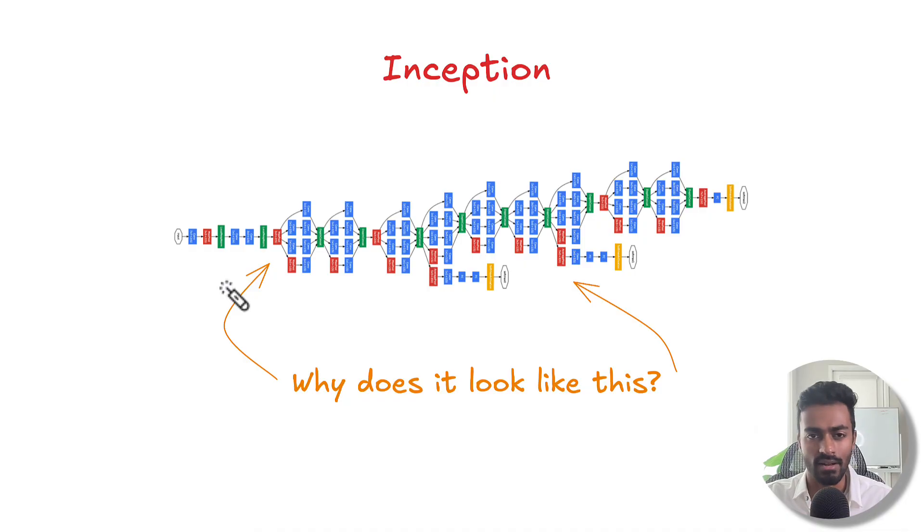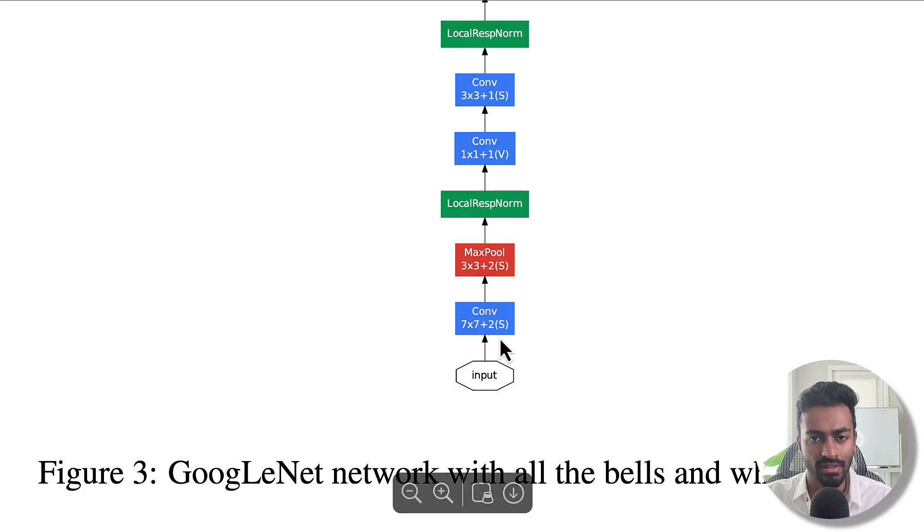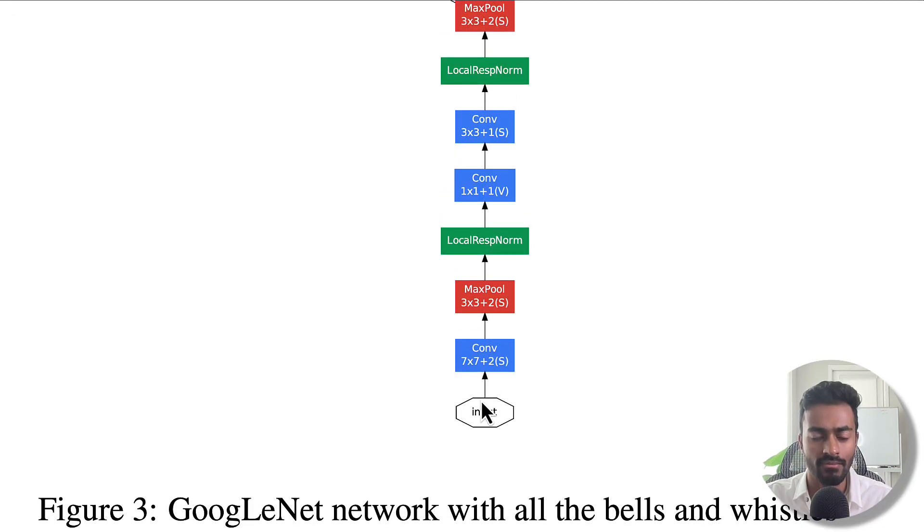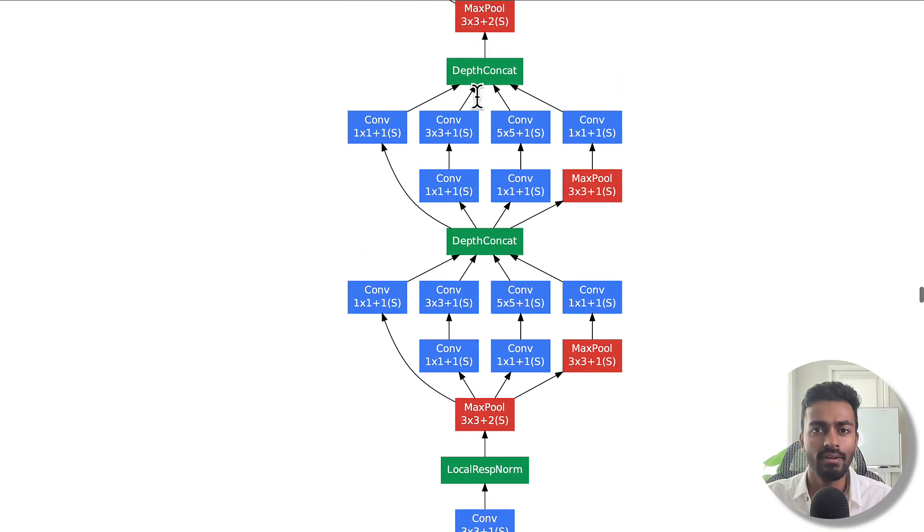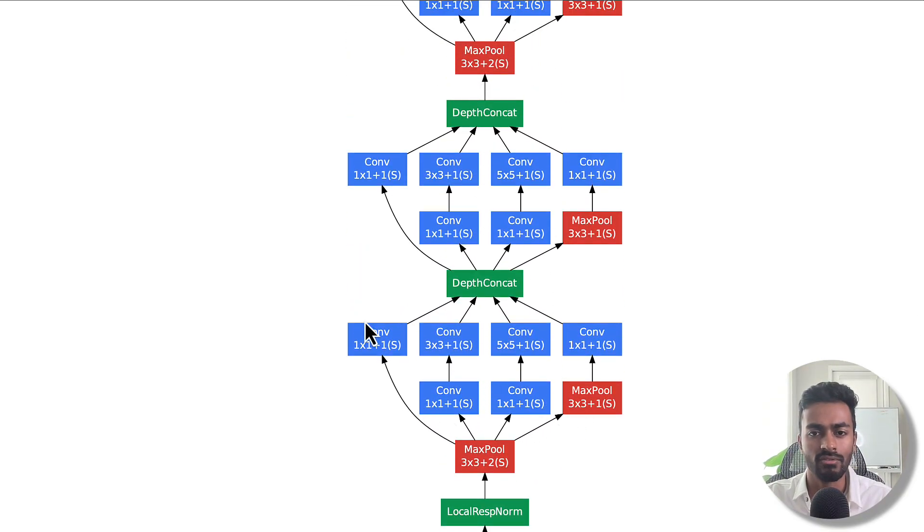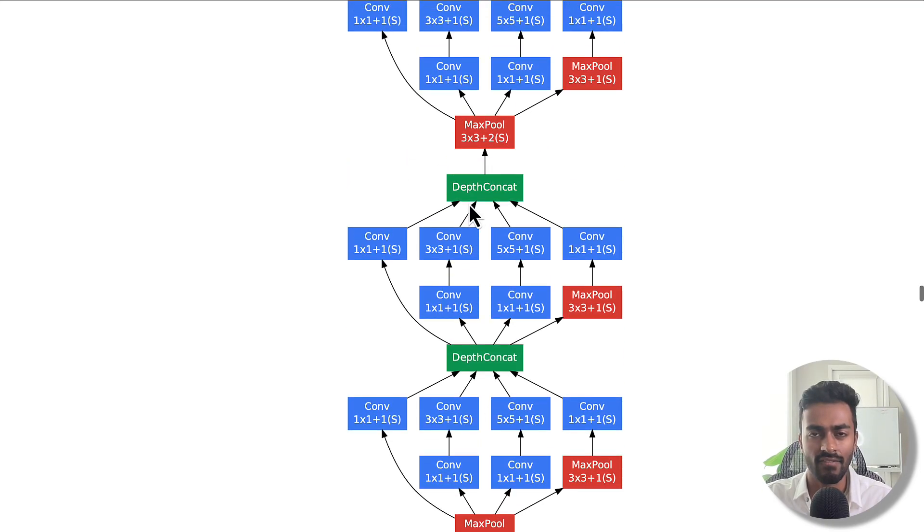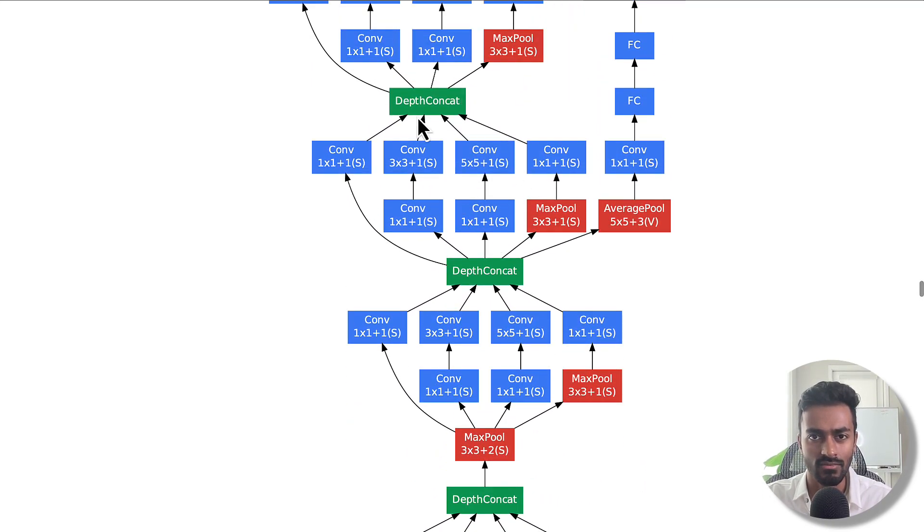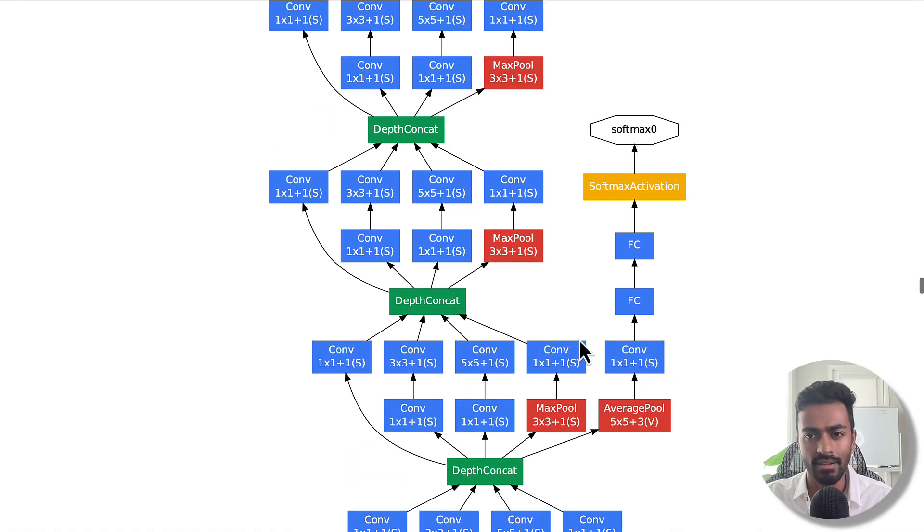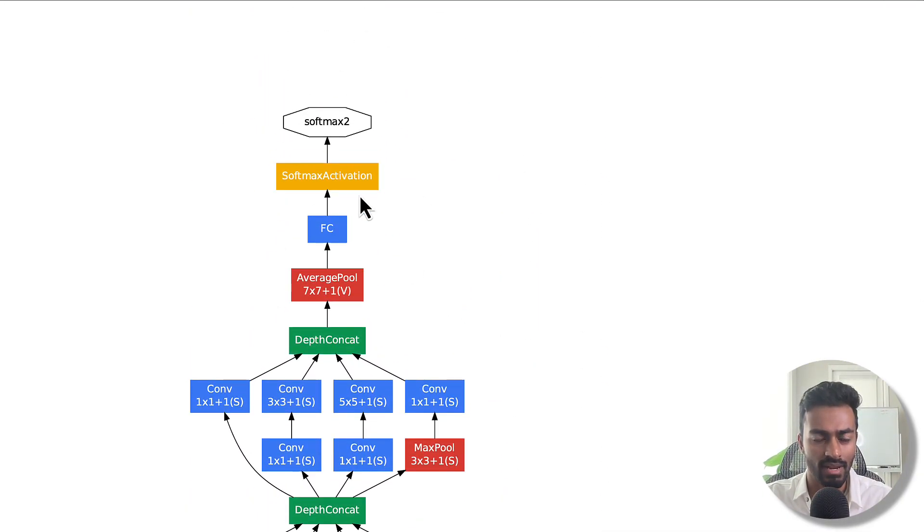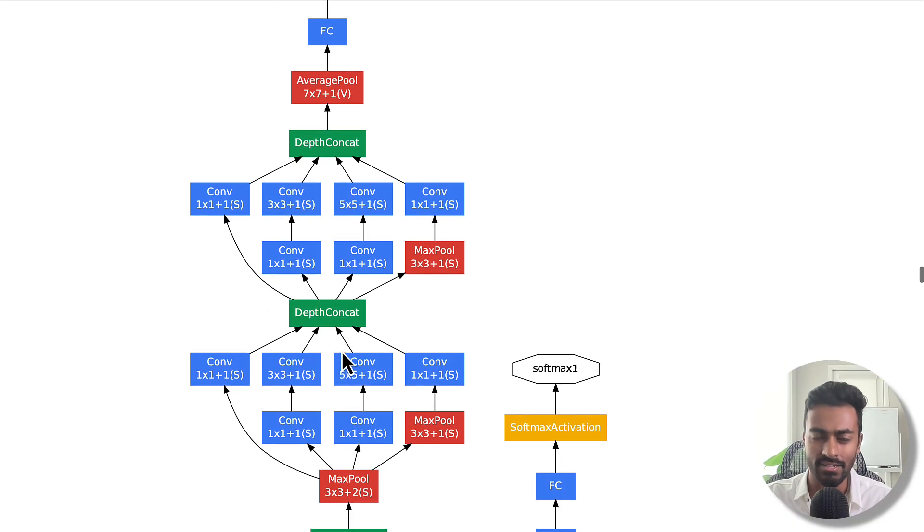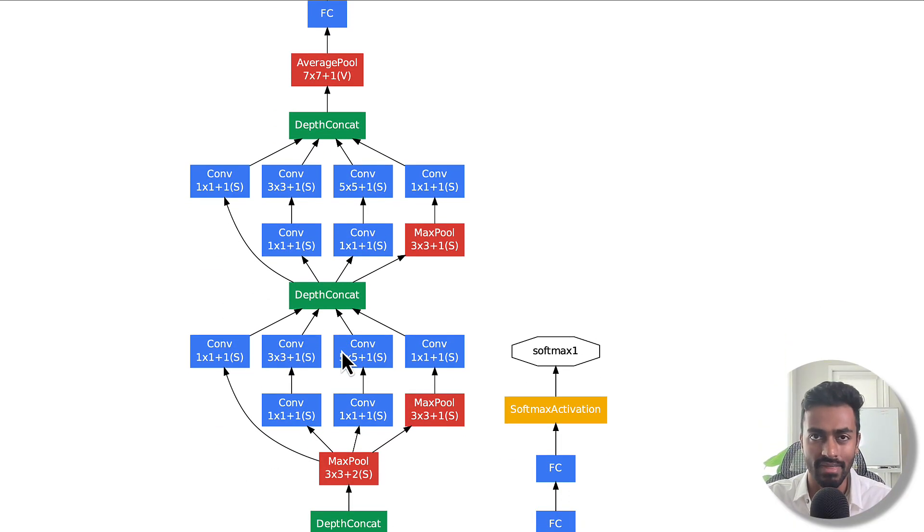But why exactly does GoogleNet or inception networks look like this? If we zoom in we have the normal convolution, activation, and pooling layers in the front but then you have a bunch of these convolution layers that go in parallel that fan out and fan in continuously. These little repeated blocks that happen. Then you have these auxiliary nodes that come over here every now and then, and then you terminate at a softmax. So why exactly do we have this structure at all?